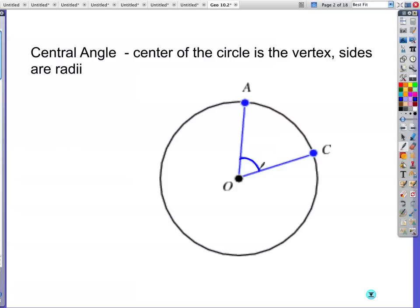The center of the circle is your vertex and the sides are the radii. So right here is the angle itself. Maybe I should do that in a different color. There's your angle. Here's a radius, here's a radius. So that's what they mean by the radii are the sides of this angle. And that's your central angle right here. Makes sense? Central, the vertex is the center.